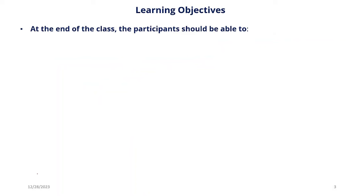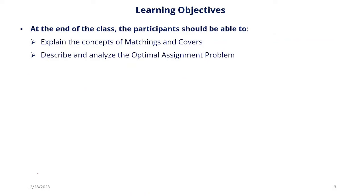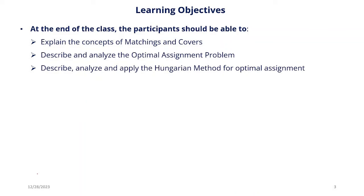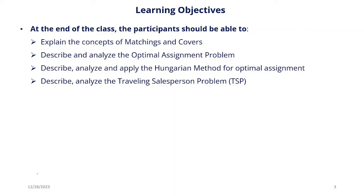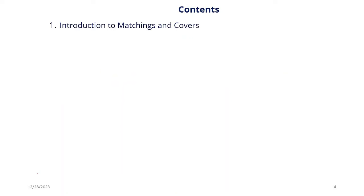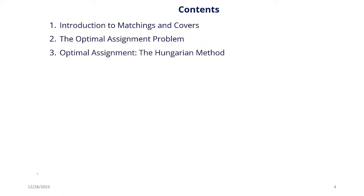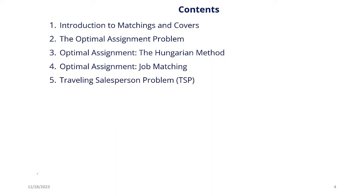Learning Objectives: At the end of the class, participants should be able to explain the concepts of Matchings and Covers, describe and analyze the optimal assignment problem, describe, analyze and apply the Hungarian method for optimal assignment, describe and analyze the Traveling Salesperson problem, and solve a Traveling Salesperson problem. Contents include: Introduction to Matchings and Covers, the optimal assignment problem, the Hungarian method, optimal assignment job matching, and the Traveling Salesperson problem.